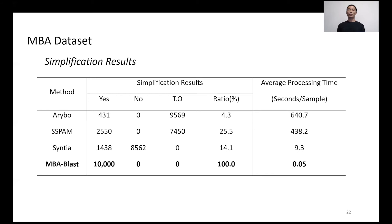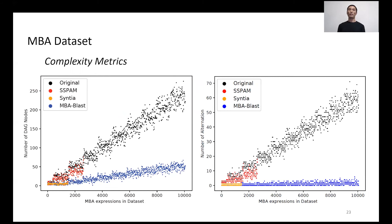For complexity metrics, a smaller value indicates a more simple MBA expression. Figures present that Syntia's dots are very close to MBA-BLAST's dots. However, MBA-BLAST can correctly simplify more MBA expressions.